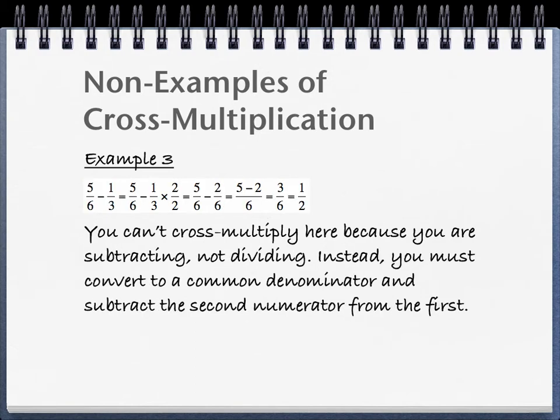Third example, 5 sixths minus 1 third. We're not dividing again, we're subtracting. So instead of cross-multiplying, we need to once again find a common denominator. In this case, that's going to be sixths. And we'll subtract 5 sixths, or sorry, we'll subtract 2 sixths from 5 sixths. And that gets you 3 sixths, which is the same as 1 half.